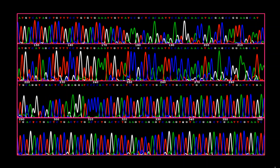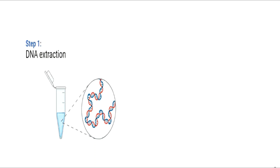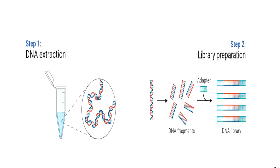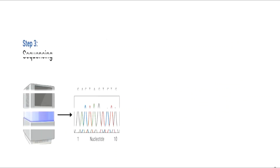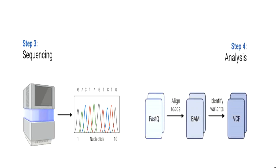To perform NGS analysis, we extract DNA and then chop it down into small pieces using restriction enzymes. Later on, these small pieces of DNA are ligated with synthetic adapters and then fed to the sequencing machines. The sequencing machines produce large amounts of sequencing data in the form of FASTQ files.